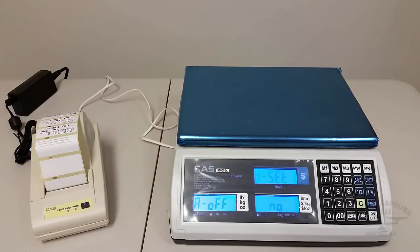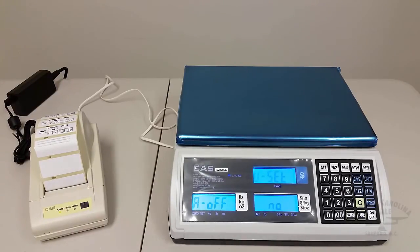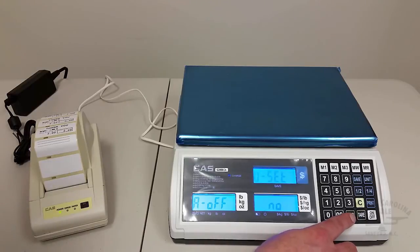And we press the zero key, and now we're in the user setup mode. And so all we need to do at this point is scroll through until we get to the printer setting, and then make one change to that. And so what we'll do is to scroll through the settings, we'll go ahead and press the zero key.